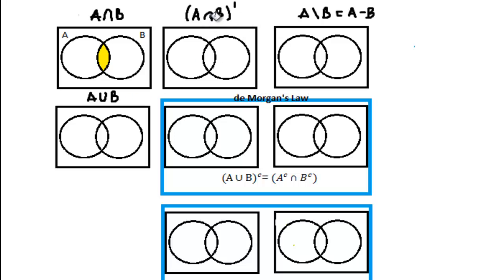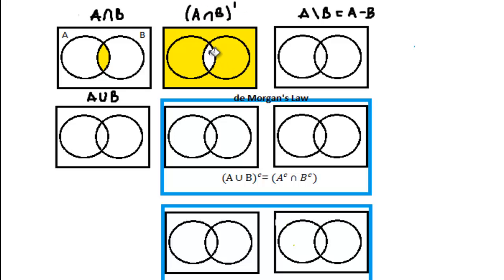Now here we have NOT (A intersection B) — so anything that's not in the intersection. Well, if this is the intersection, then this region is not in the intersection, this is not in the intersection, and this is not in the intersection. Therefore, NOT (A intersection B) is everything that's yellow.